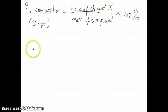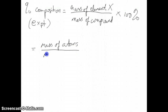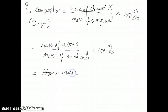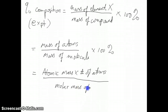Another way to calculate percent composition is to use molar masses and the number of atoms. In this case, you calculate percent composition as: mass of atoms in the compound divided by the mass of molecules in the compound, times 100%. This can be done theoretically because the mass of atoms is just the atomic mass times the number of atoms, and the denominator is simply the molar mass of the molecule.